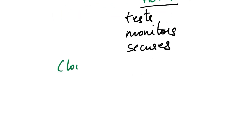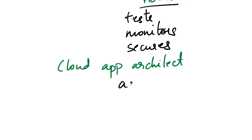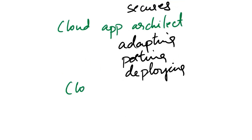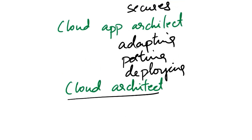Next role is cloud application architect. They support in adapting, porting, and deploying applications. Next role is cloud architect. The cloud architect designs, develops, and manages cloud solutions.